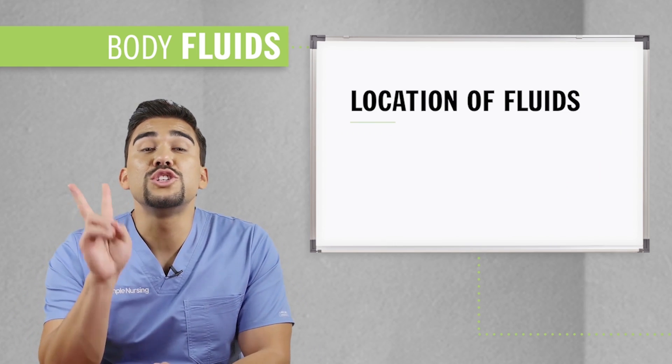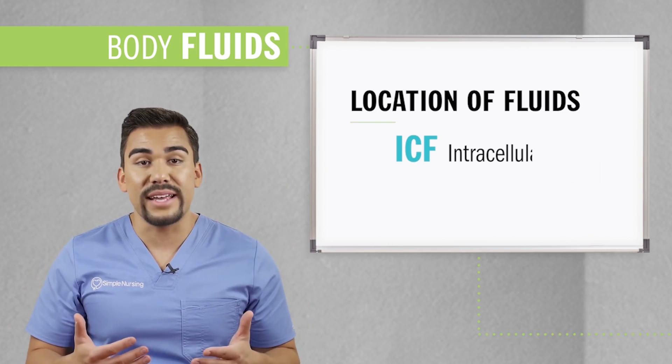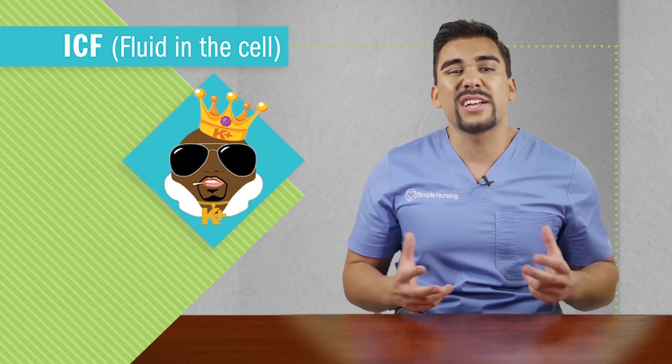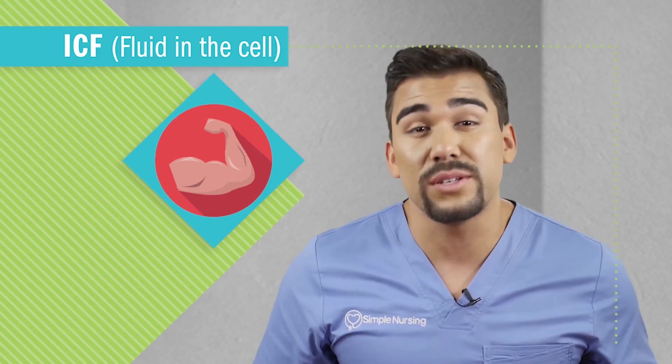Body fluid is located in two main areas: fluid inside the cell called the ICF, the intracellular fluid, and fluid outside the cell called the ECF, the extracellular fluid. For the ICF, our key electrolyte is potassium — I call him king potassium, the king of action and contraction in your muscles. He's the most abundant electrolyte inside the cell because of the sodium-potassium pump. As much as two-thirds of all fluid in the body is intracellular, mainly in the skeletal muscle cells — that's like 75% of fluids inside the cell.